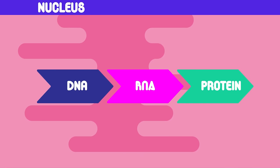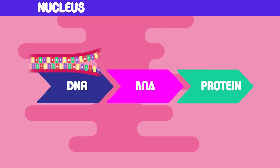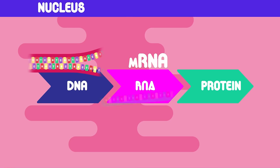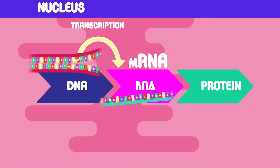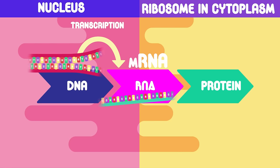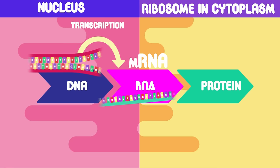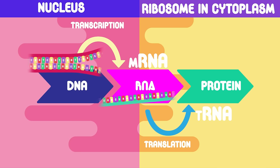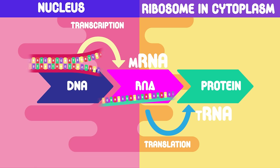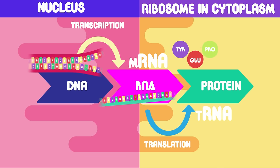So there we have protein synthesis. Inside the nucleus, the DNA molecule is unzipped from around the gene by RNA polymerase. The DNA is then replicated and mRNA is formed in the process of transcription. The mRNA travels out of the nucleus and into the cytoplasm where it binds with a ribosome. In the ribosome, the nucleotide sequence of the mRNA is translated by the tRNA, which carries the related amino acids. The polypeptide chain is formed and will eventually fold into the required protein.